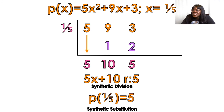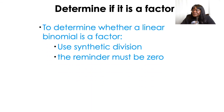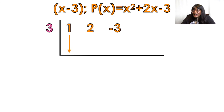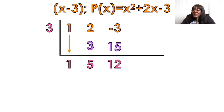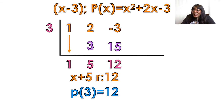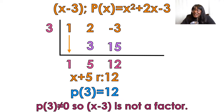Last but not least: determine if it's a factor. If the remainder is zero, the answer is yes, it is a factor. If the remainder is anything else, it is not a factor. We're going to do synthetic again: multiply the outsides, add the insides, multiply the outsides, add the insides. My remainder is 12. Is it a factor? No, it is not a factor. P of 3 does not equal zero, so x minus 3 is not a factor.